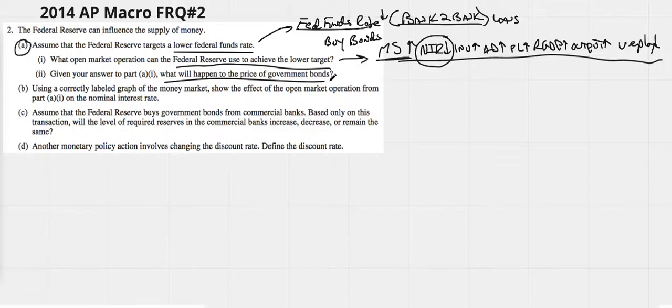What will happen to the price of government bonds? You need to know that interest rates and bond prices go in opposite directions. So if interest rates go down, bond prices go up. If interest rates go up, bond prices go down. I don't know that I've ever seen them ask you to explain this, but you just need to be able to know that they have an inverse relationship.